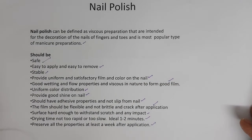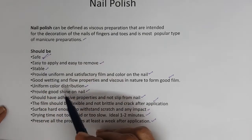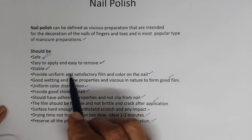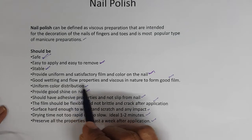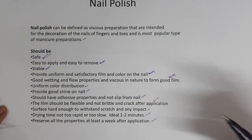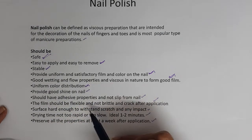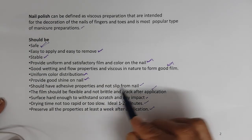What are the ideal characteristics or features of a nail polish? It should be safe, easy to apply and easy to remove. It should be stable, provide uniform and satisfactory film and color on the nail. Good wetting and flow properties, and viscous in nature to form a good film. It should not be too watery so it flows out, nor too thick so spreadability is difficult — so ideal viscosity. Uniform color distribution on the nail, and good shine on the nail. It should have adhesive properties and not slip from the nail.